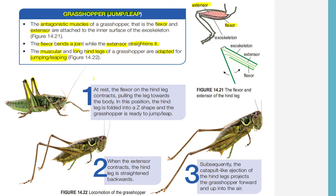First, let's talk about the mechanism of locomotion when the grasshopper is at rest. When it is at rest, the flexor of the hind limb contracts, pulling the leg towards the body. That's why we can see the Z-shape — the hind leg is folded into a Z-shape — and the grasshopper is now ready to jump or to make a leap.